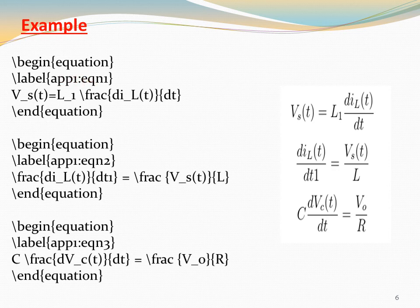Labeled in appendix, equation numbers 1 and 2. Now start the equation. The differentiation is written dI_L(t) in the numerator and dt in the denominator. End equation.